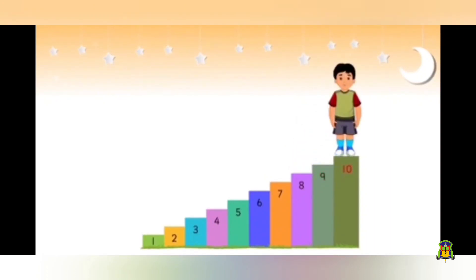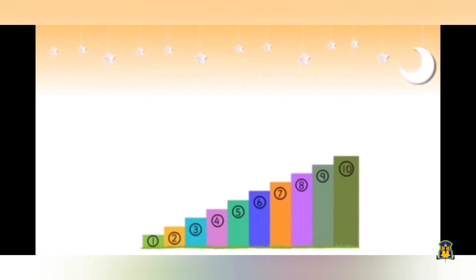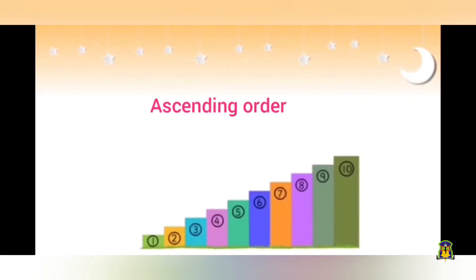Did you observe that as he climbs up each step, he is ascending or moving to a larger, bigger number than the previous number? Thus, we say that when the numbers are arranged from smallest to largest — that means smallest to biggest — they are called ascending order.